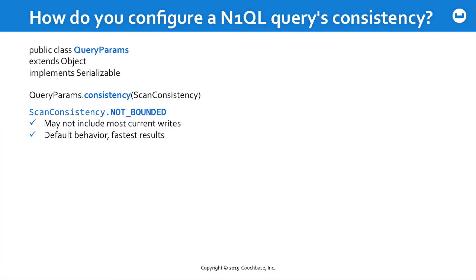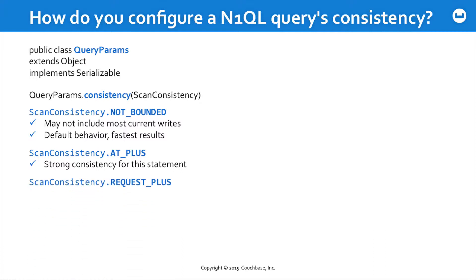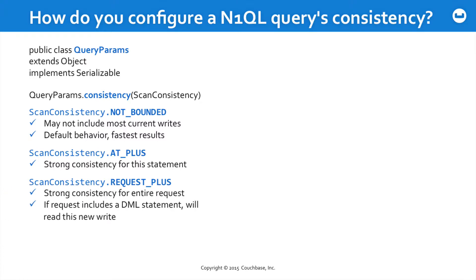N1QL does rely on an ongoing indexing process. If you need immediate consistency, you could use the modifier AT_PLUS, which requires the server to provide immediate consistency for one particular statement within a query. Multiple statements could be included within each query request, so it's also possible to pass a query parameter REQUEST_PLUS, meaning you want strong, immediate consistency for the entire request. With this approach, if the request includes a DML statement, you will immediately read the new write you've just made. So you always have a choice — immediate or eventual consistency — when working with your N1QL indexing.